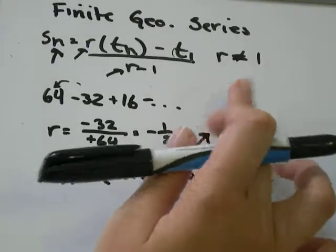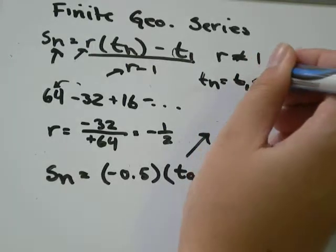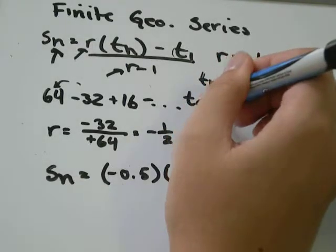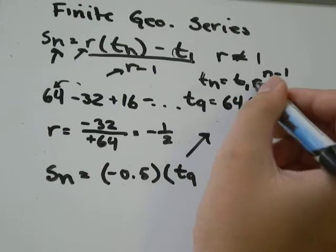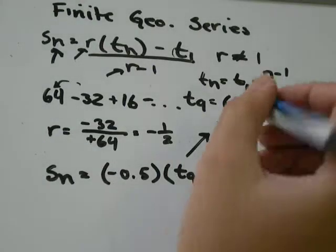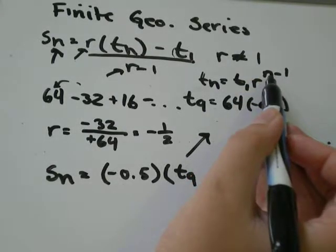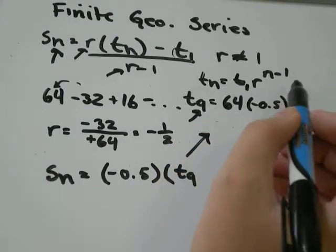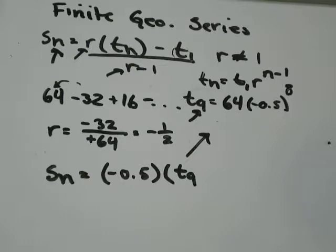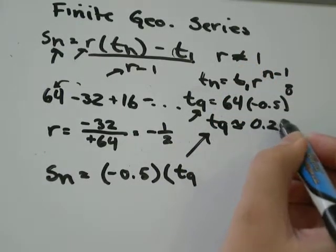I'm just going to go up here. We have the formula TN equals T1, R to the N minus 1. So to find T9, we're going to take the first term, which is 64, multiply by the common ratio, which was negative 0.5, sign is really important, to the exponent of N minus 1. In this case, N is 9, so N minus 1 will be 9 minus 1, which will be 8. And you can just stick that in your calculator, and I get that T9 is approximately equal to 0.25.